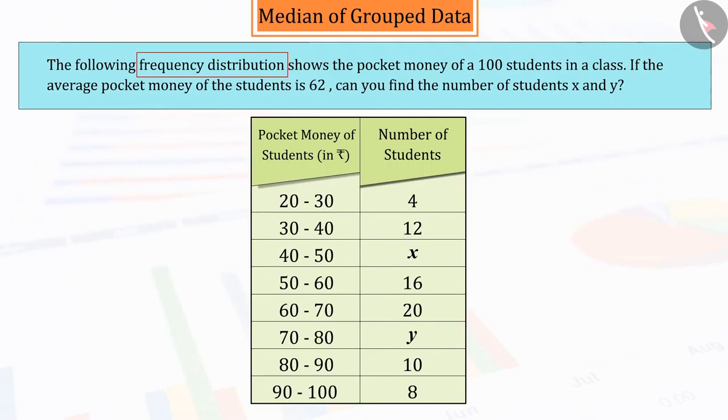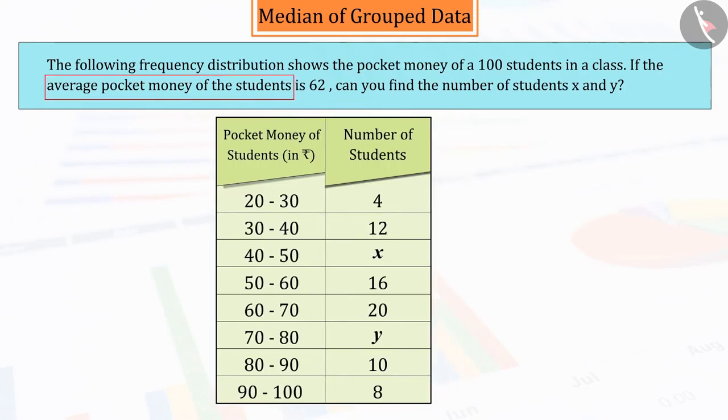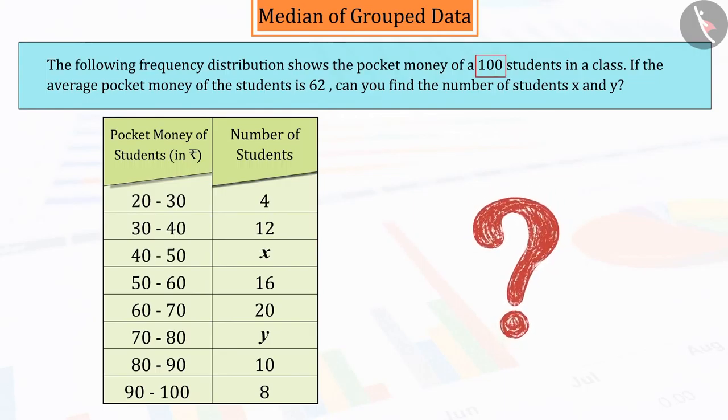The following frequency distribution shows the pocket money of a hundred students in a class. If the average pocket money of the students is 62 rupees, can you find the number of students x and y?